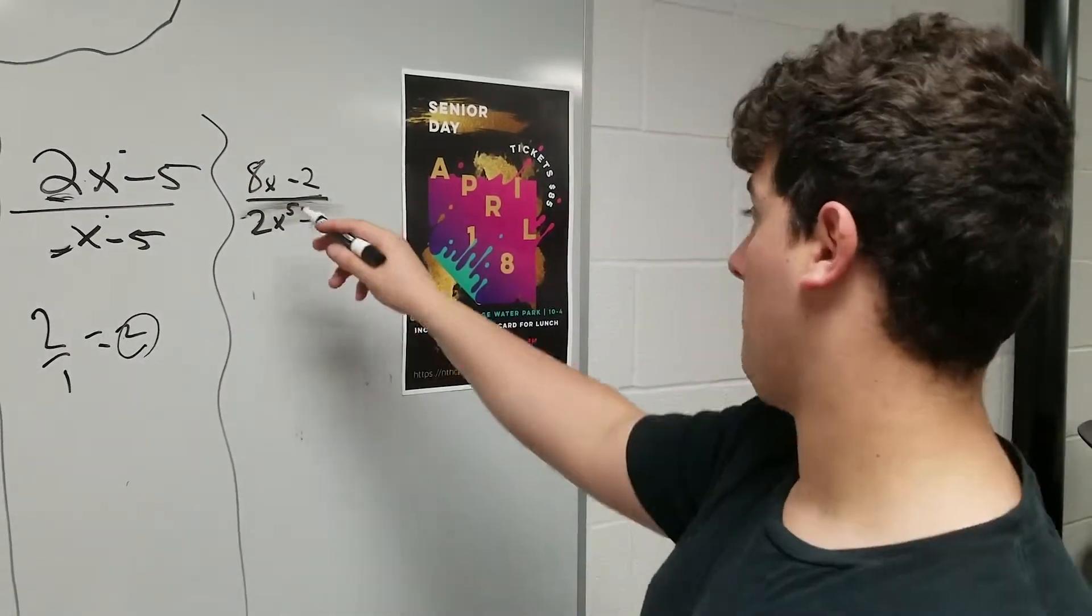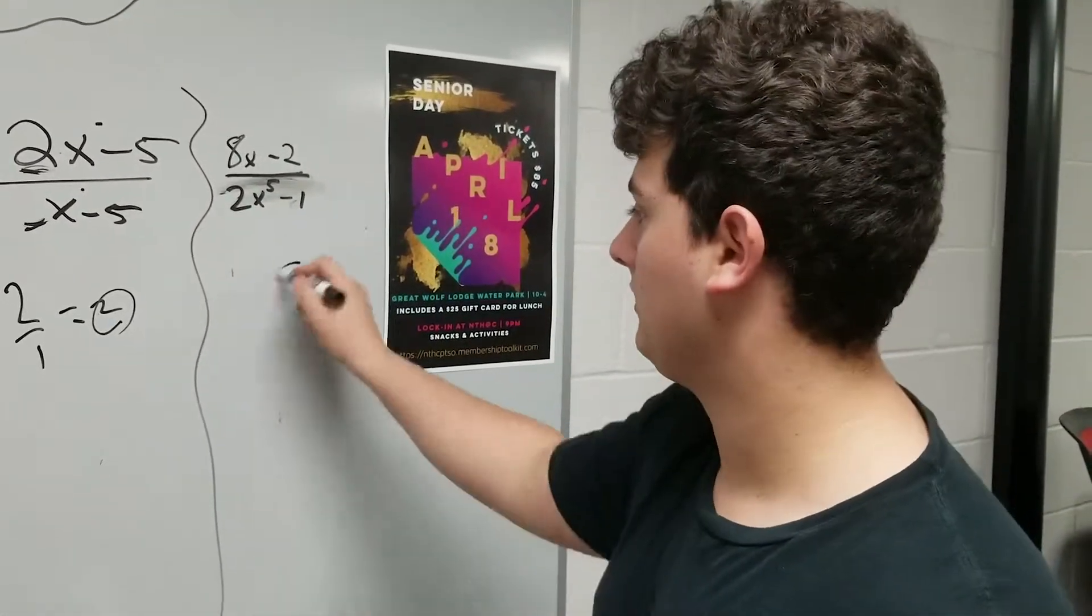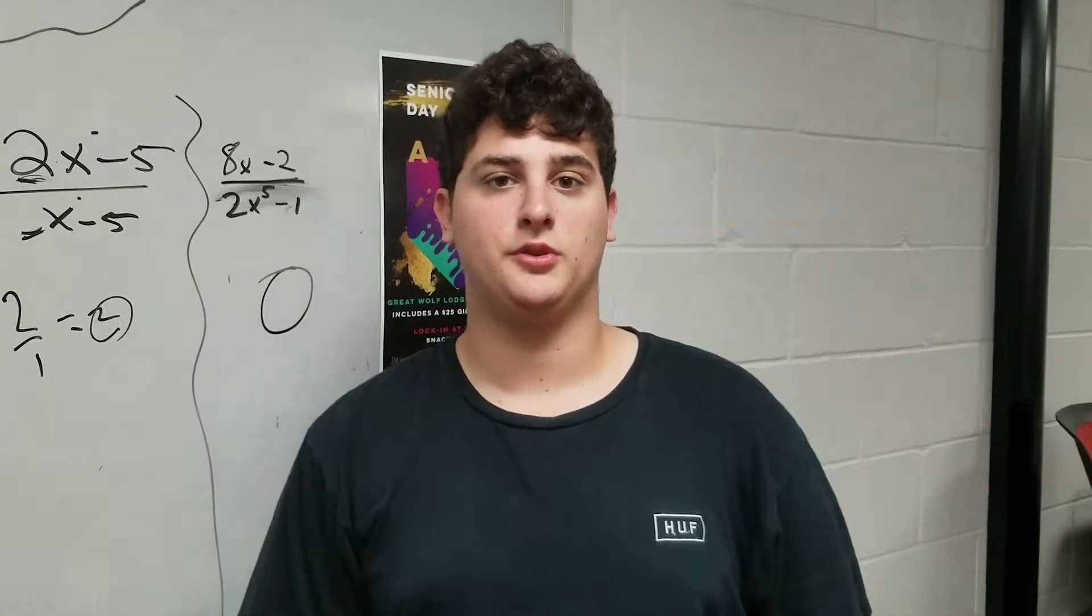Here I see it's bottom-heavy. There's just a 1 here and there's a 5 here. When it's bottom-heavy, the answer is 0. And that was vertical and horizontal limits.